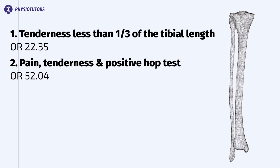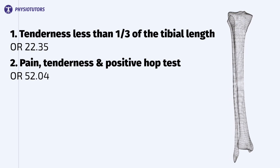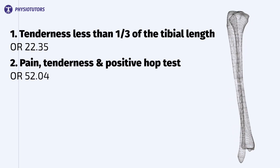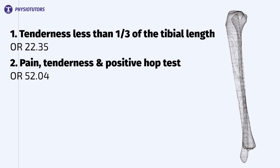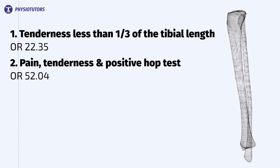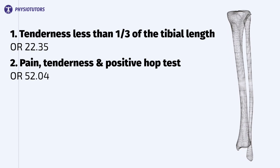Number two: the odds for a medial tibial stress fracture if pain, tenderness, and a positive hop test were all present was 52.04, which is huge.